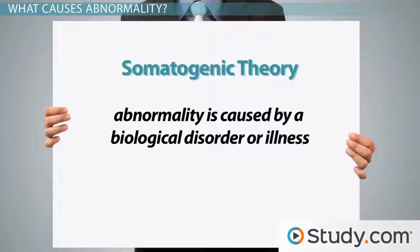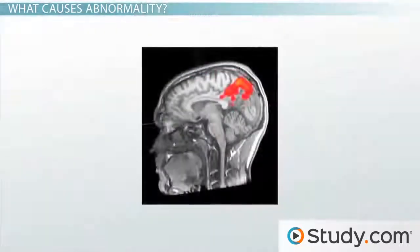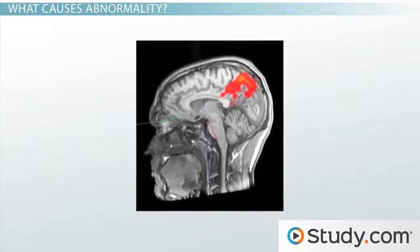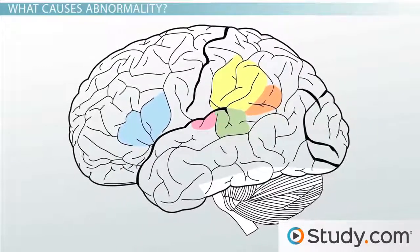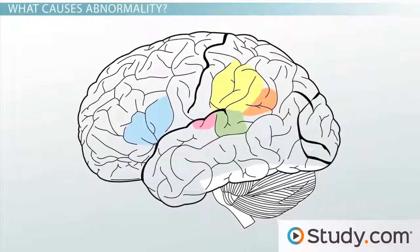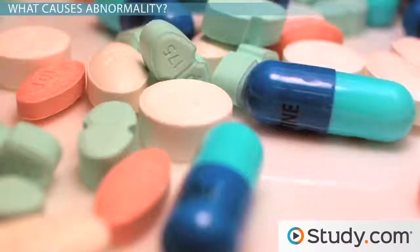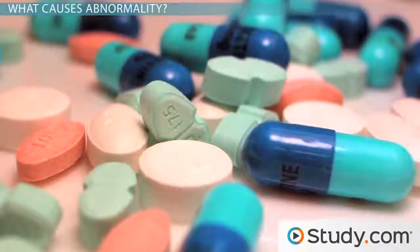Somatogenic theory states that abnormality is caused by a biological disorder or illness. In the example above, somatogenic theory would say that there's something wrong with her brain. Perhaps she has damage to the left side of her brain, which causes language disorders. Or maybe she has damage to the bottom part of the front of the brain, which makes people do things that are socially inappropriate. Either way, somatogenic theory explains abnormality in terms of physical causes.